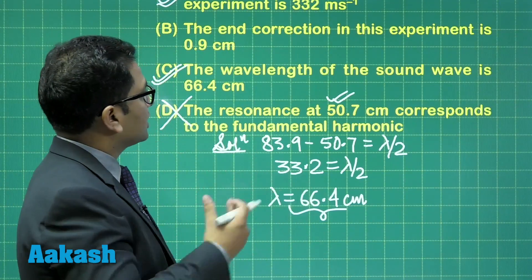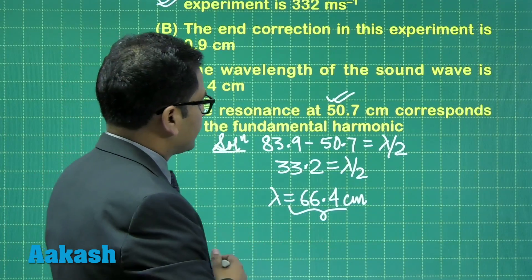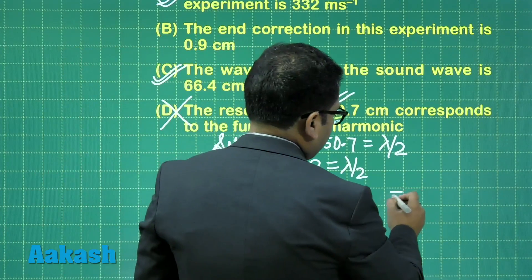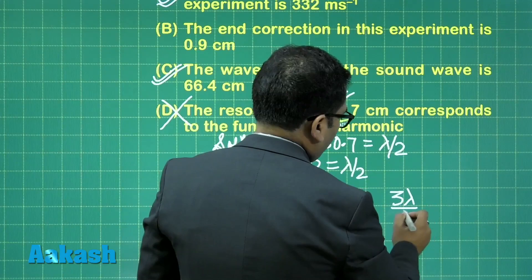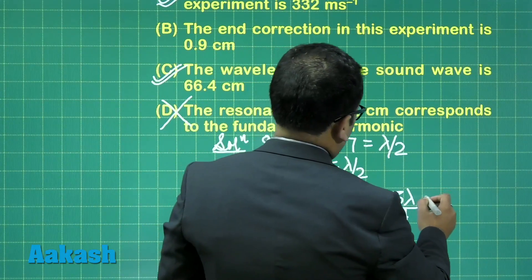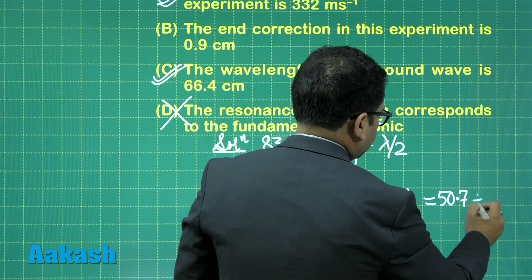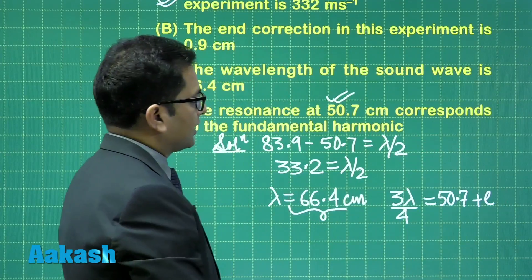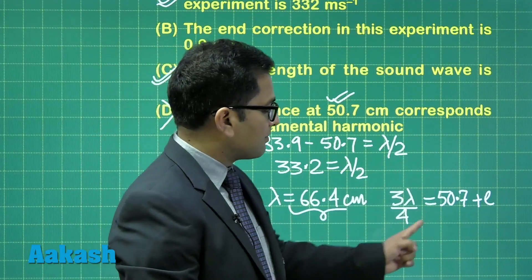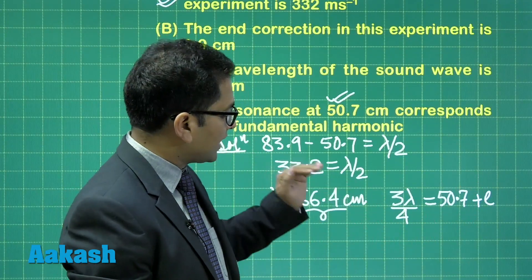And then, the term comes out to calculate the end correction. Now, you could very easily see, 3 lambda by 4 has to be equal to the calculation value, which is 50.7 plus of end correction. That's the situation. 3 lambda by 4 is 50.7 plus of end correction, because we have already figured out that 50.7 is in the third harmonic.